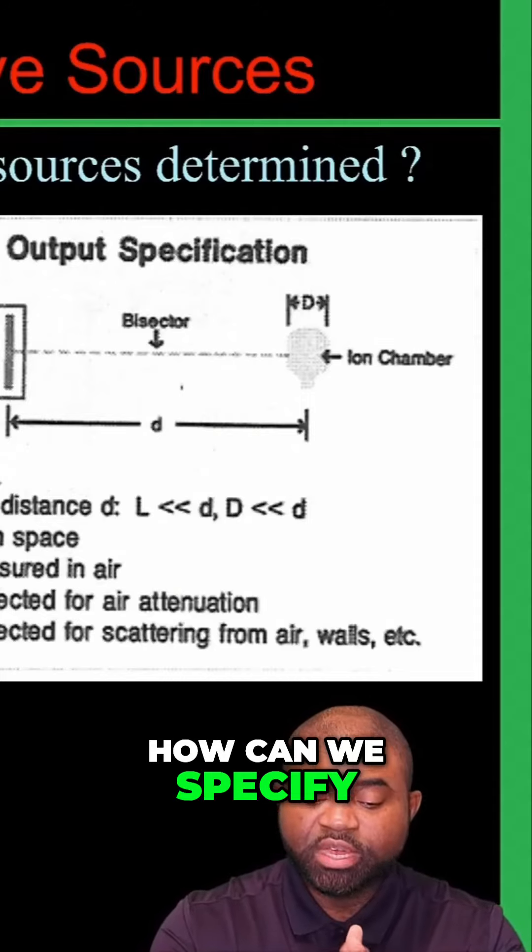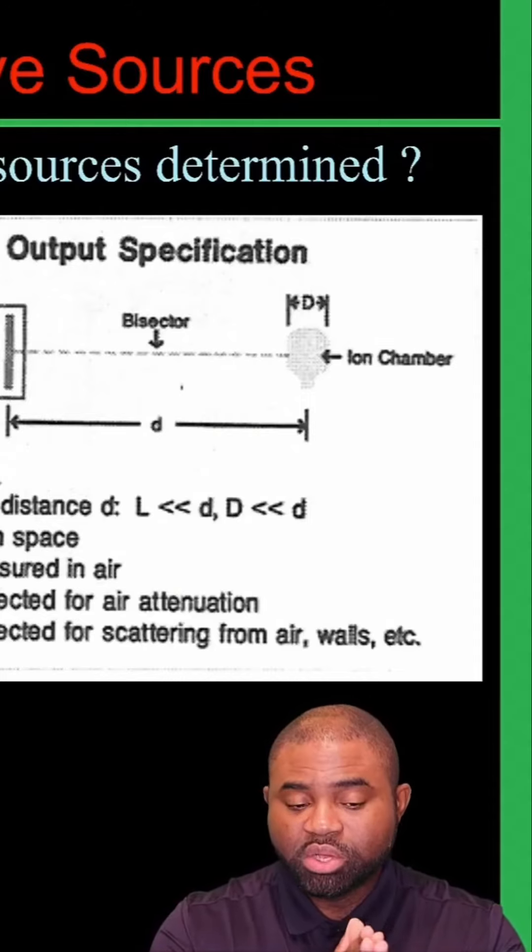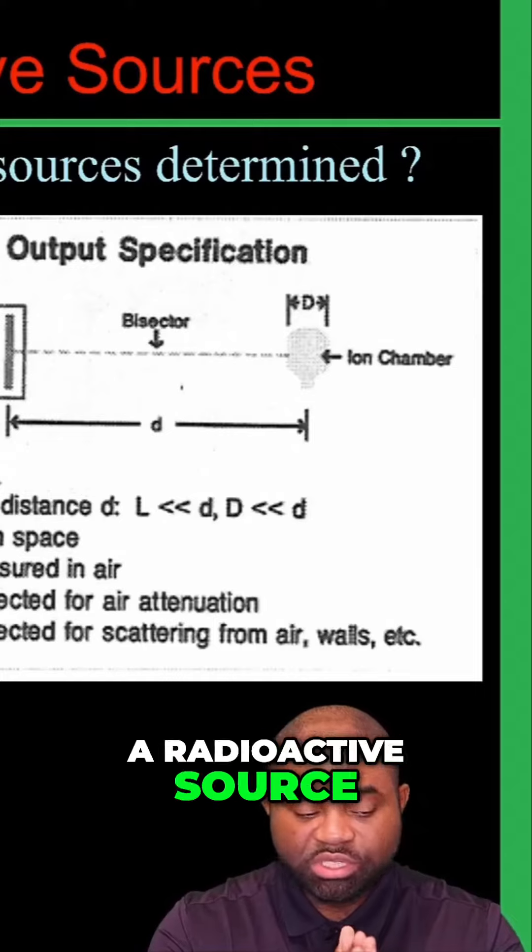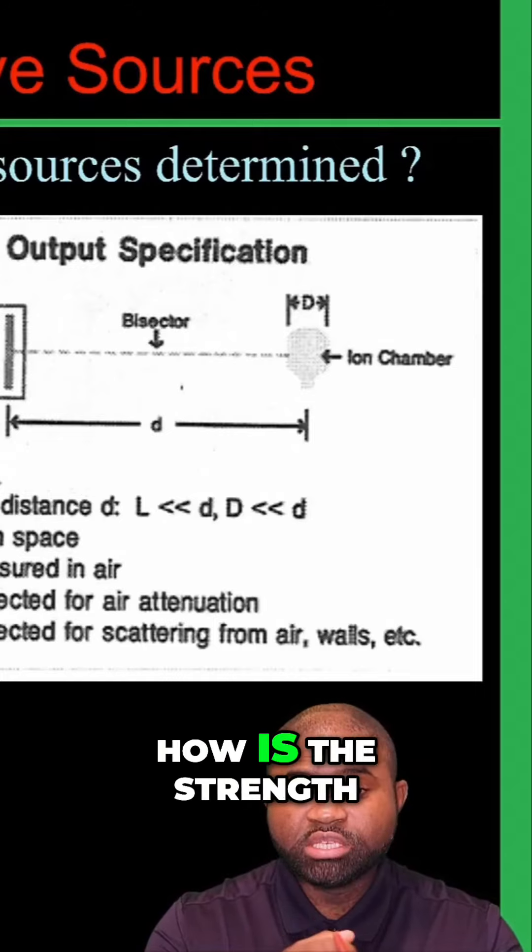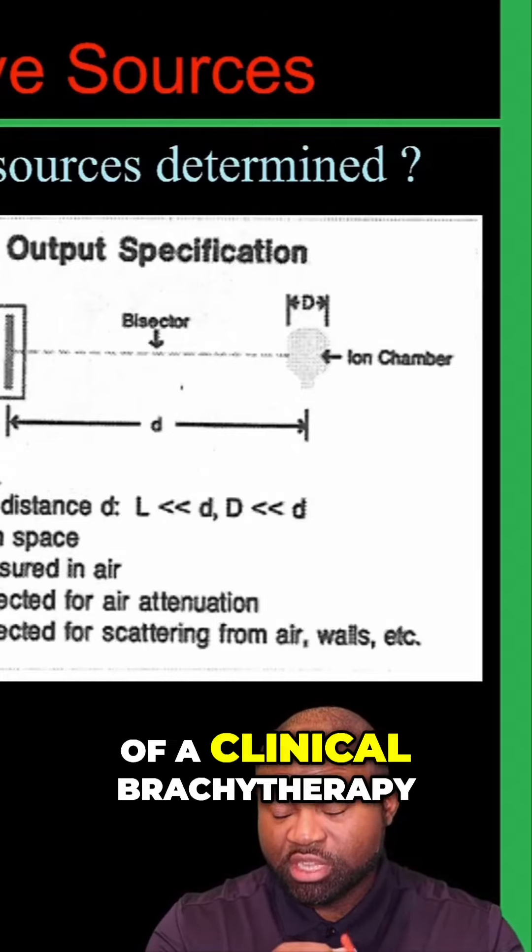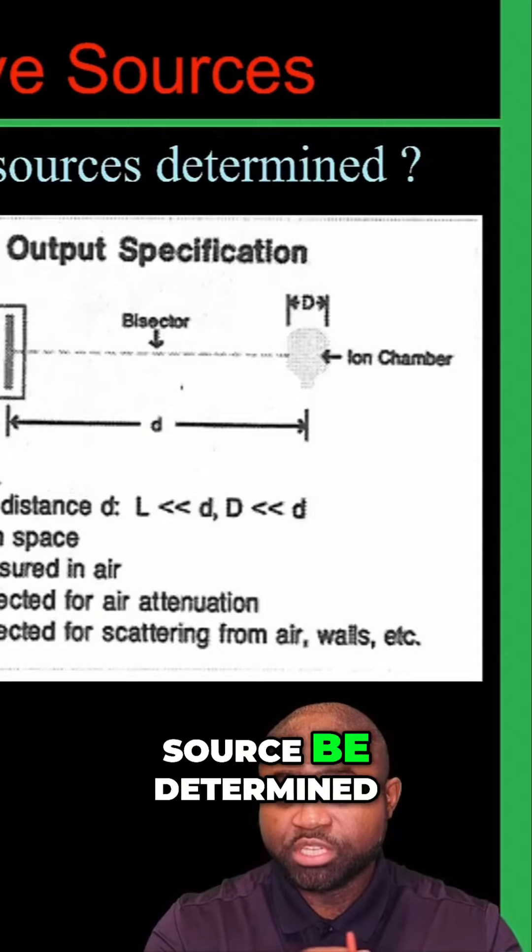How can we specify a radioactive source? In other words, how is the strength of a clinical brachytherapy source be determined?